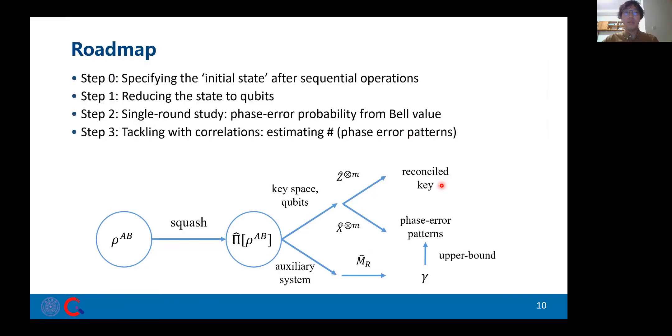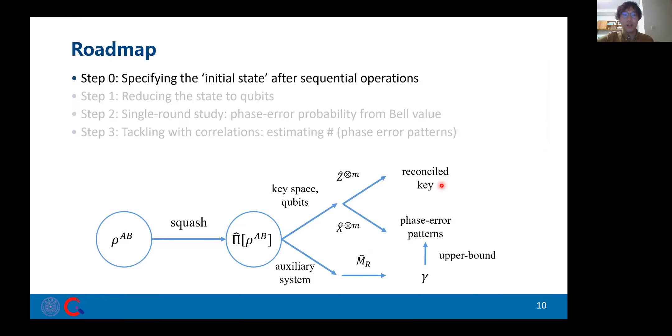The roadmap for our analysis is as follows. As building a model from LEGO bricks, we reduce this problem to simpler ones. We effectively reduce the unknown high-dimensional space to qubits, study the single-round probabilities, and then move on to the frequency in multiple rounds. Now, before all this, we should specify what quantum state we perform in the analysis.